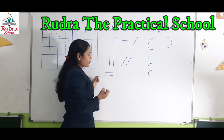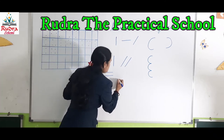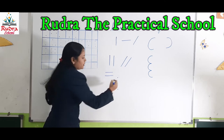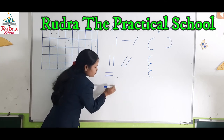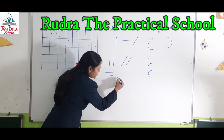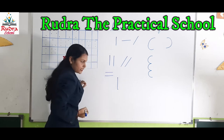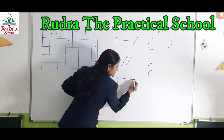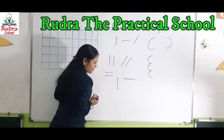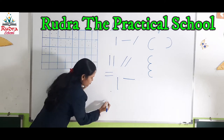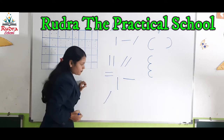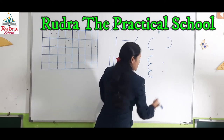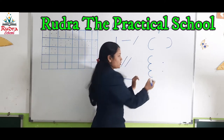Now, with the help of dots, let's see how to make these strokes. These are two dots — join these two dots, this is a standing line. Join these two dots, this is a sleeping line. Join these two dots, this is a slanting line.